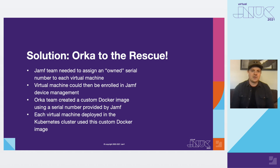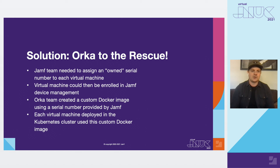The Jamf team essentially needed to assign an owned serial number to each virtual machine. What this means is that we took the serial number from a physical piece of hardware owned by the company and injected that into the virtual machine. Those virtual machines could then be enrolled in Jamf device management. To accomplish this, the Orca team created a custom Docker image using a serial number which Jamf provided. Each virtual machine deployed in the Kubernetes cluster then used this custom Docker image. In Orca's architecture, each macOS VM is housed inside a container, so we were able to add that serial number to the container image for use by the macOS VM.